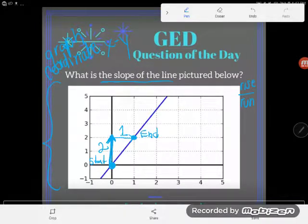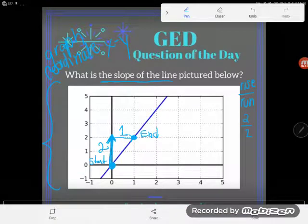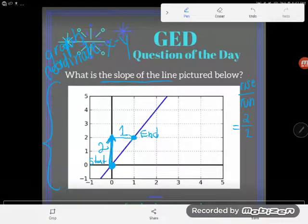And so my rise here is two, my run here is one. I get two over one. And this is a correct answer. However, it is not yet done, because as you know, all final fraction answers should be simplified.